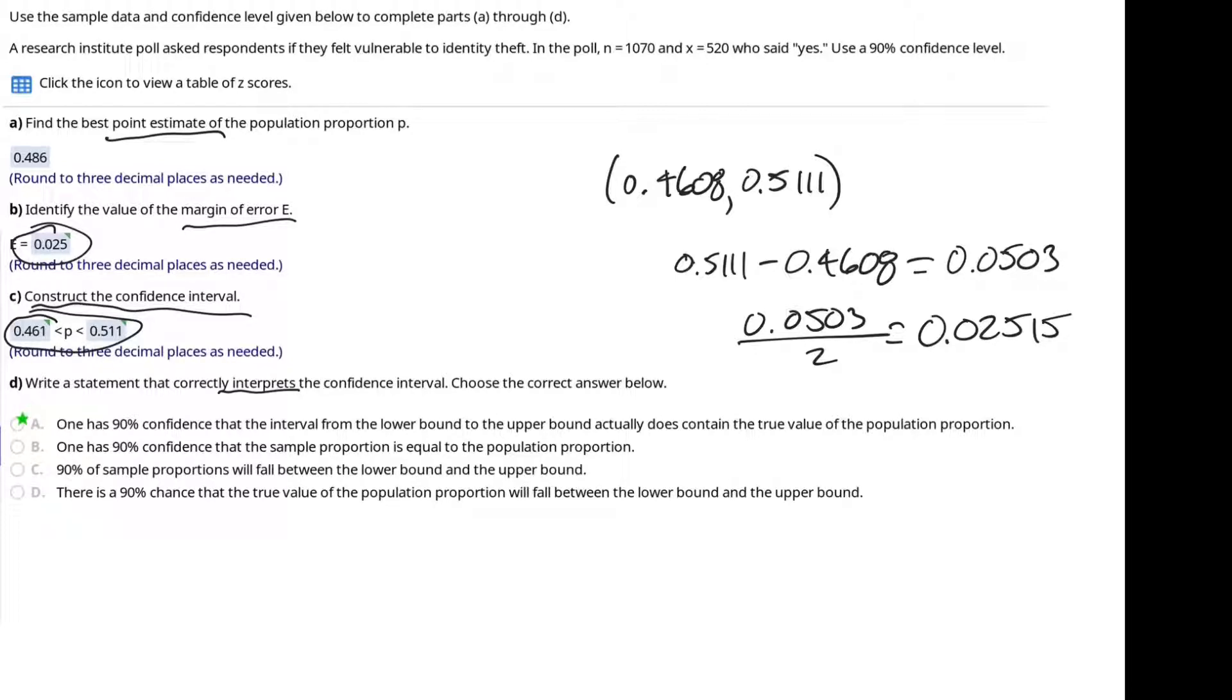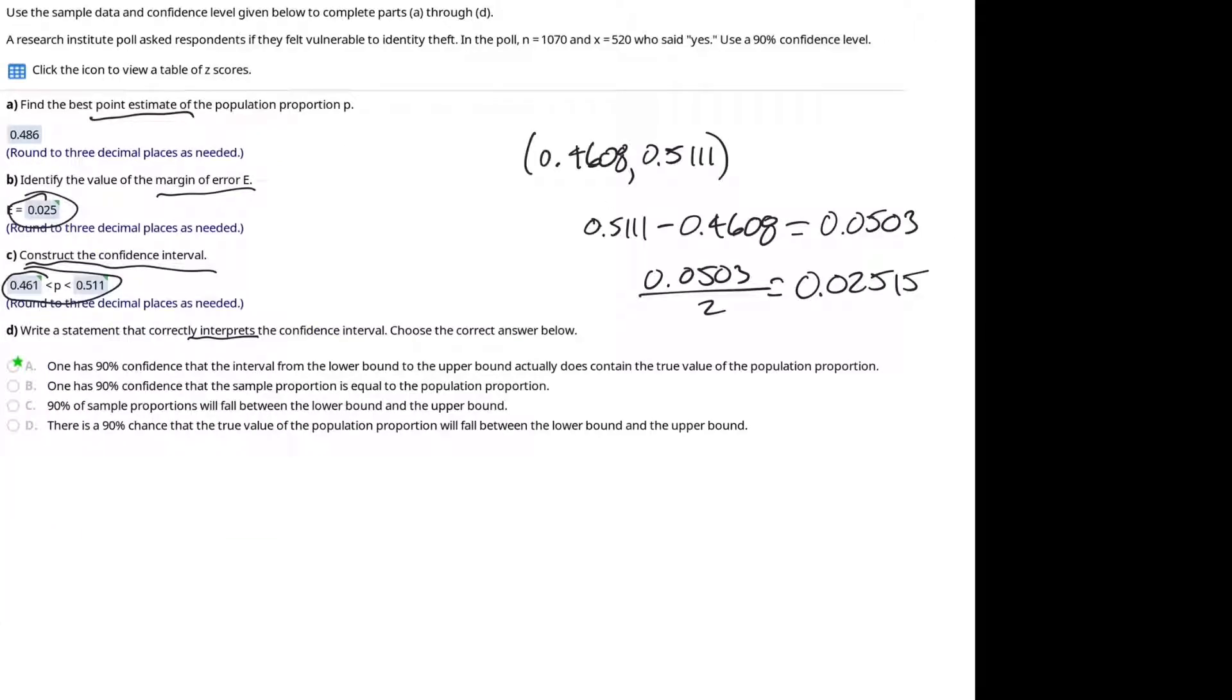Let's put these values on a number line so that we can understand why the margin of error is half of the interval width. In order to construct a confidence interval, we begin with a point estimator, such as the sample proportion.